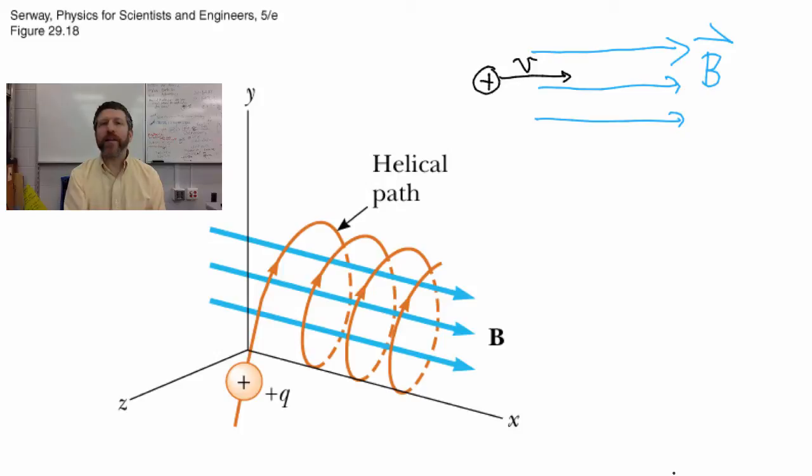Well because the magnetic force is QV cross B, the angle between V and B here is zero and the cross product, the sine of theta of zero, is also zero. There is no force on this particle so it will just continue through completely with its velocity unchanged.